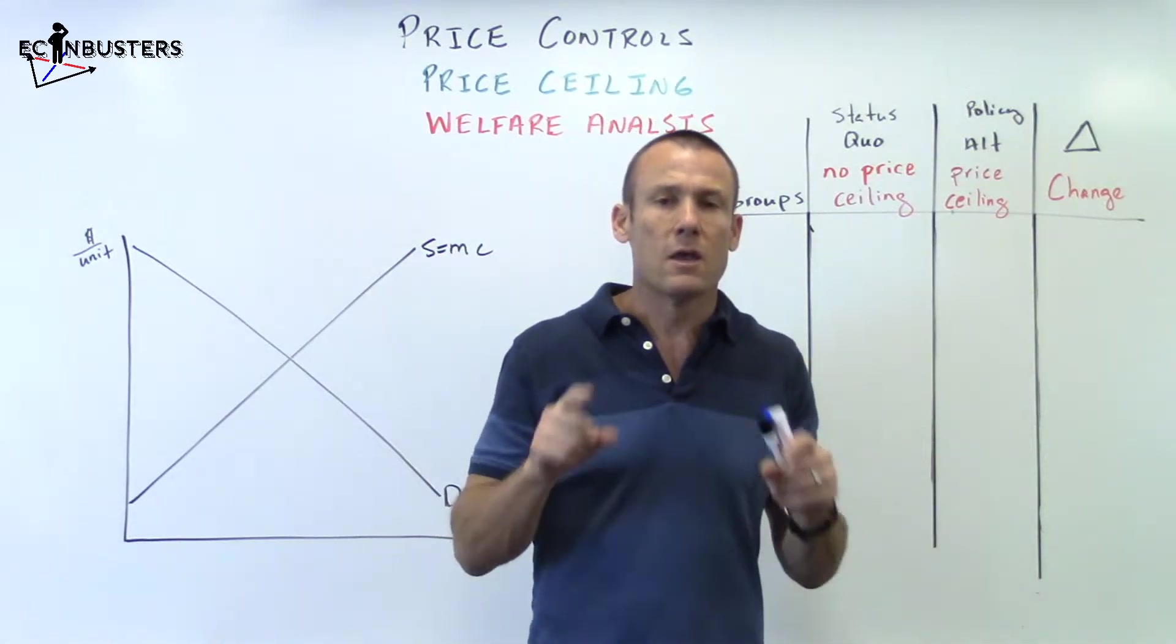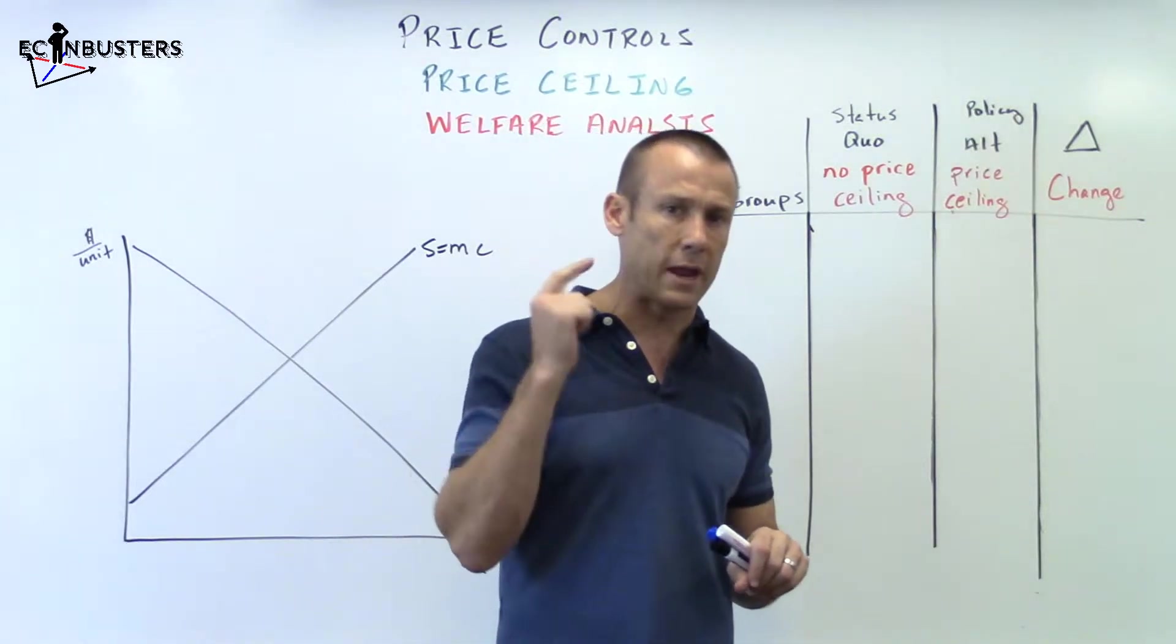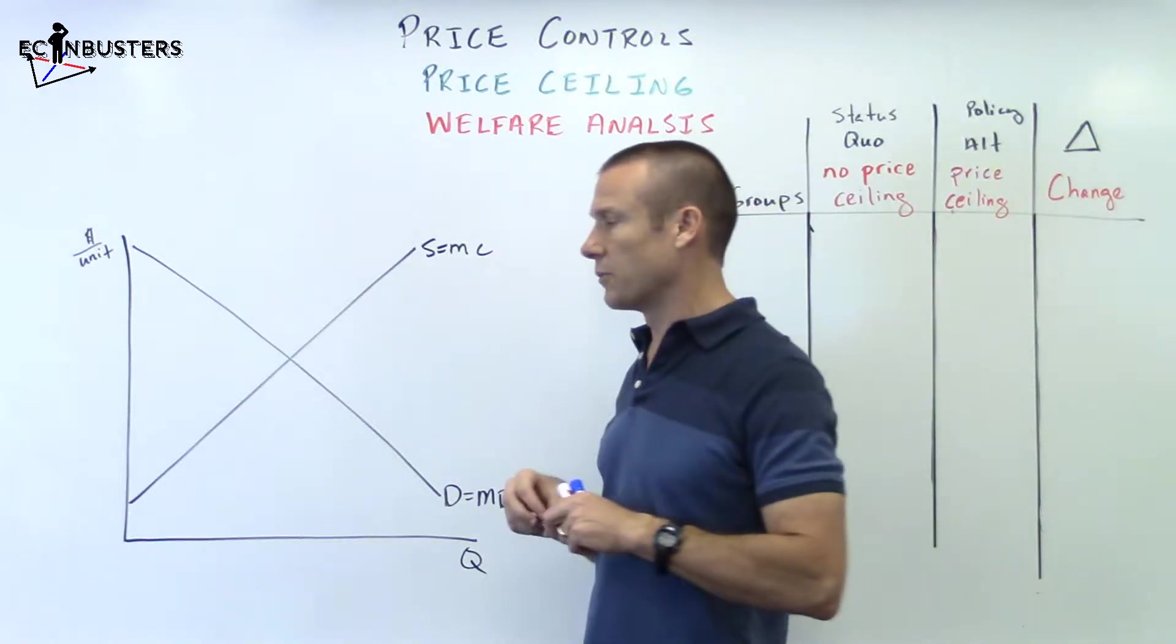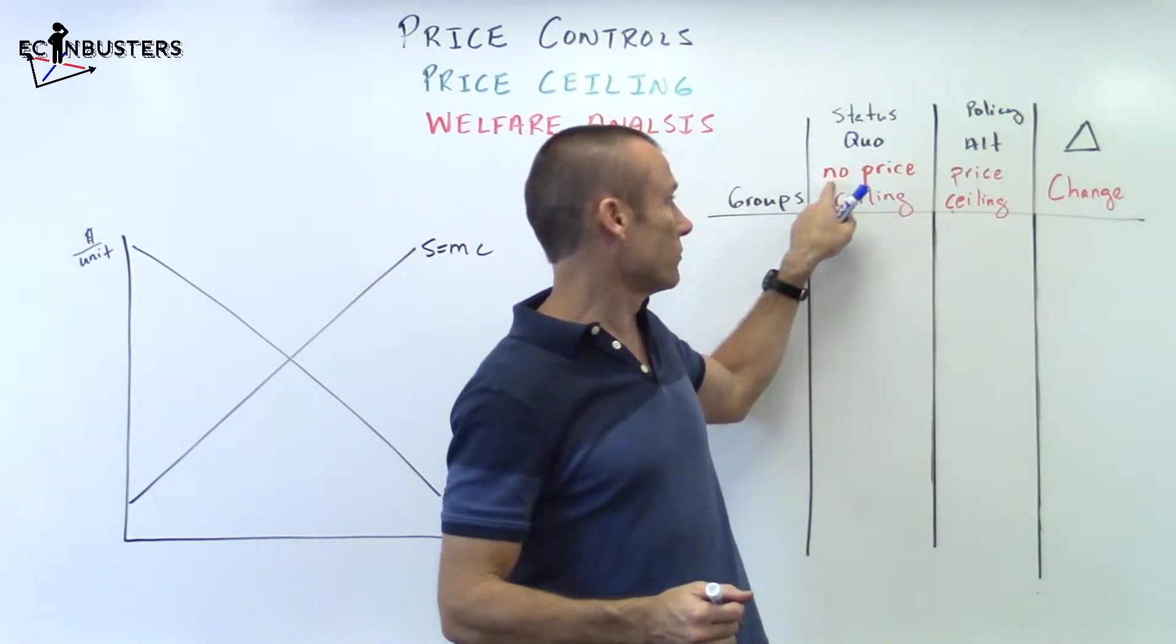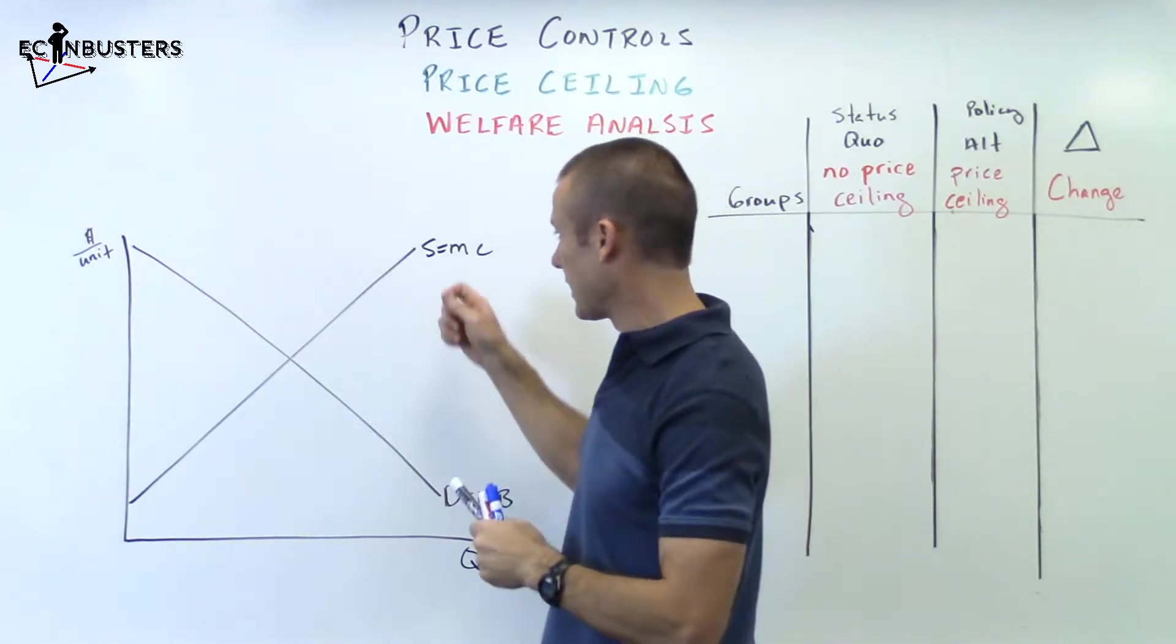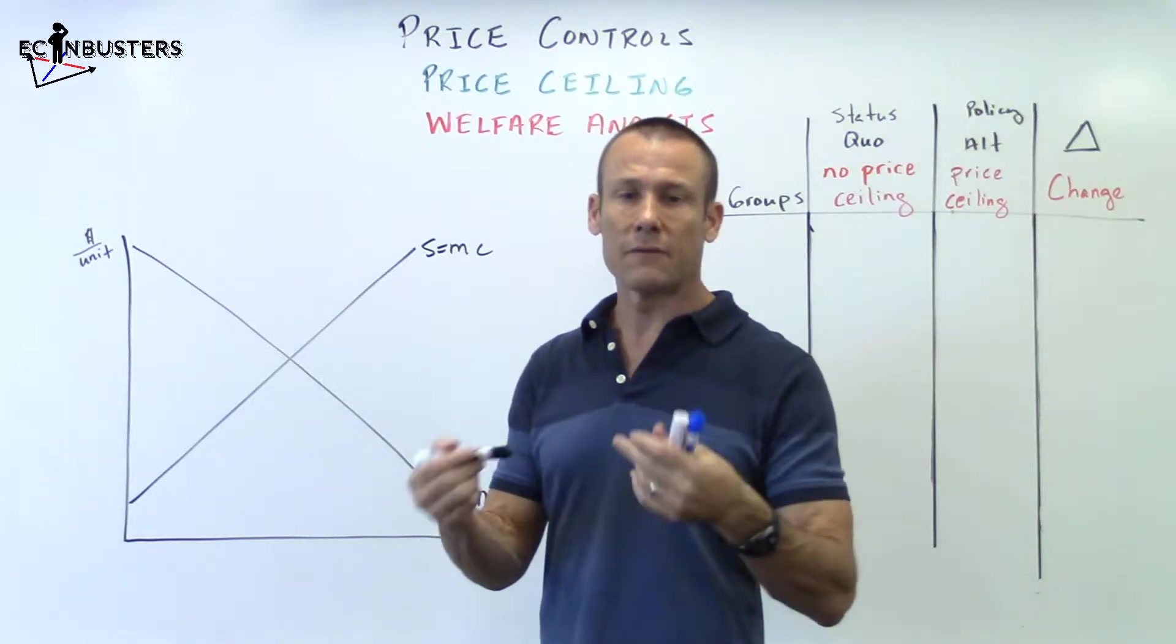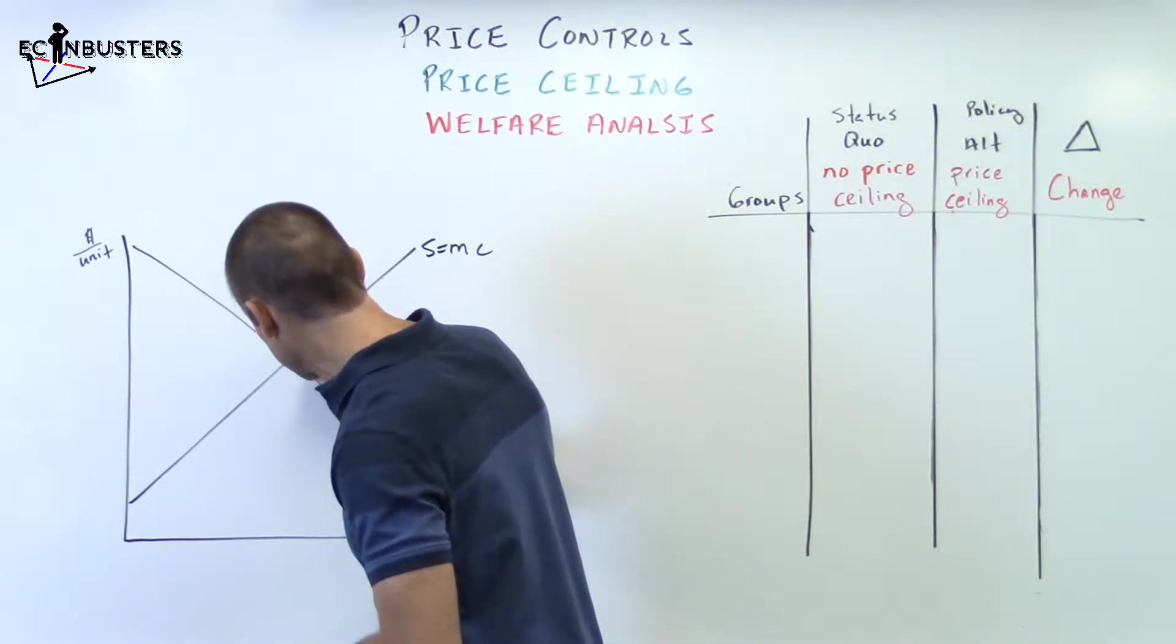Eventually, way down the line, the groups that we could be looking at is producer, consumer, external actors, what we call third parties, and the government. So we've got lots of groups we can look at. But for this video, the only two groups that we've got is producer and consumer. We'll be very stylized. Stylized means simple.